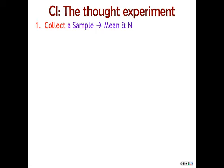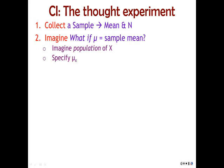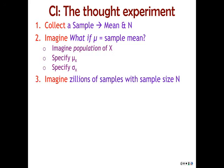First of all, we need that sampling distribution of means. We collect a sample and we note its mean and its standard deviation. Then we imagine to ourselves: what if we just happened to guess the population mean? What if the population mu is actually our sample mean? That lets us imagine the population that our sample came from, with a specific mean and a specific standard deviation. So far, you have to be told what the standard deviation is. Later, we'll estimate it also. So we imagine zillions and zillions of samples with a sample size n — now that we've specified the population of raw scores of x, we imagine lots of samples with the same sample size that we used.